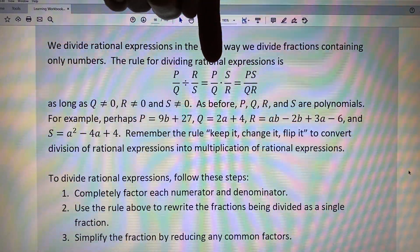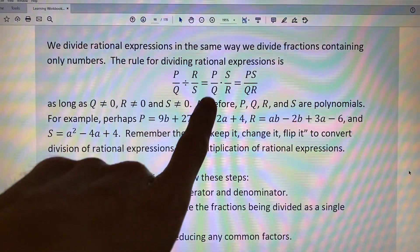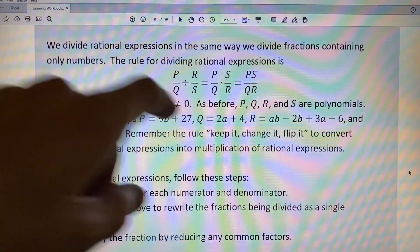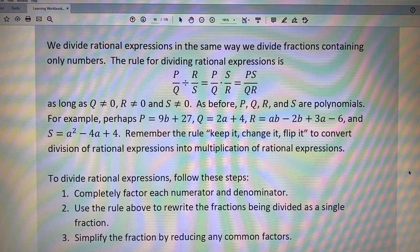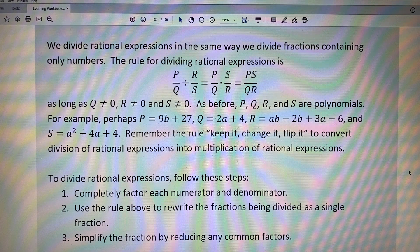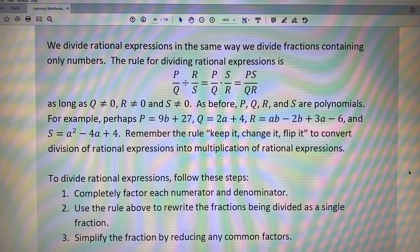And just as before, we multiply across to get the new numerator, multiply across to get the new denominator. So P over Q times S over R becomes the single fraction PS over QR.